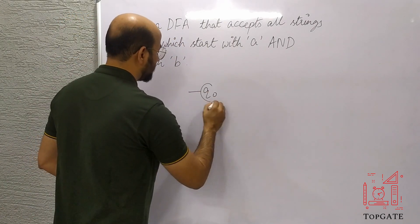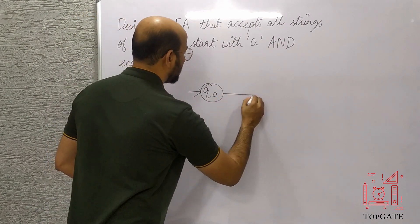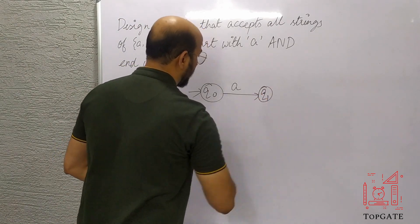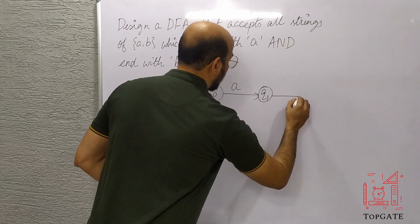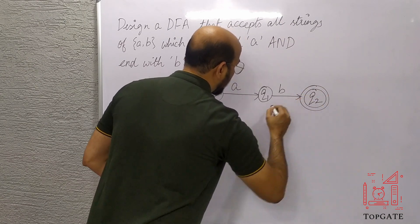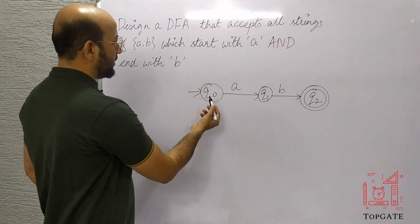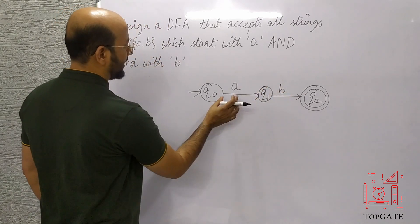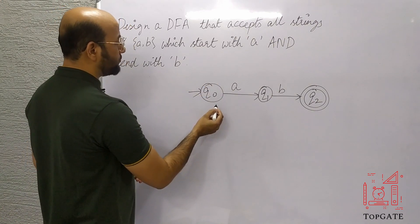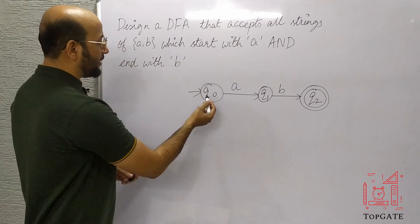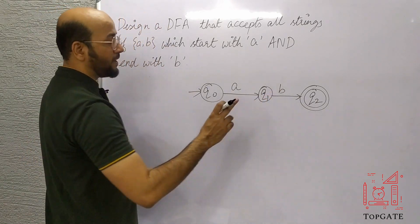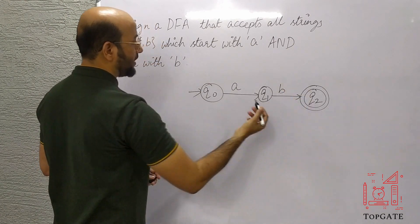So for this shortest possible string I need to design a DFA that should contain at least 3 states. We start with some initial state Q0, and at Q0 we give input A — the string should start with A — and we reach state Q1. From Q1 I move with input B and go to state Q2, making it the final state. Now to complete this DFA we need exactly one path for every input from every state. On Q0 we have only a path for A, so I need a path for B. At Q1 I have only a path for B, so I need a path for A. At Q2 I need paths for both A and B.